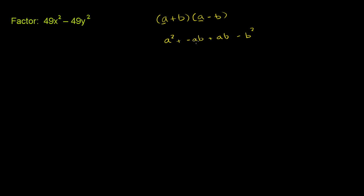So when you do that, you have a negative ab and a positive ab, they cancel out, and you're just going to be left with an a squared minus a b squared. Now, this thing that we have here is exactly that pattern.